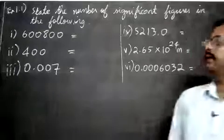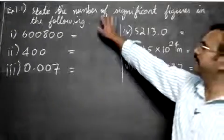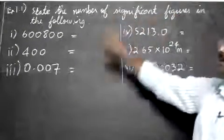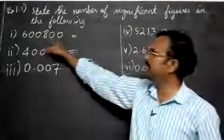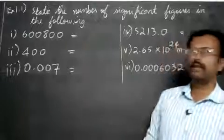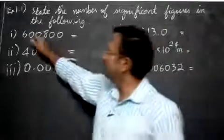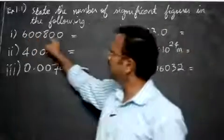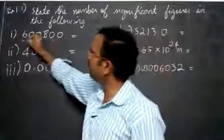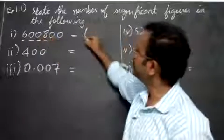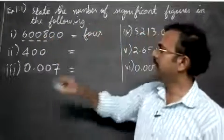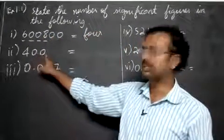Let us go to Example 1.1: state the number of significant figures in the following. First one: 6-double-zero-eight-double-zero. How many significant digits are there? The trailing zeros are not significant, so one, two, three, four — there are four significant digits.